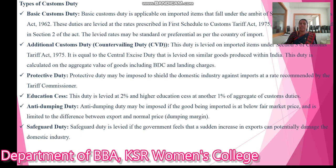Next is Additional Custom Duty, also called Countervailing Duty or CVD. This is levied on import items under Section 3 of the Custom Tariff Act 1975. It is equal to the central excise duty that is levied on similar goods produced within India. This duty is calculated on the aggregated value of goods including Basic Custom Duty and the landing charges.